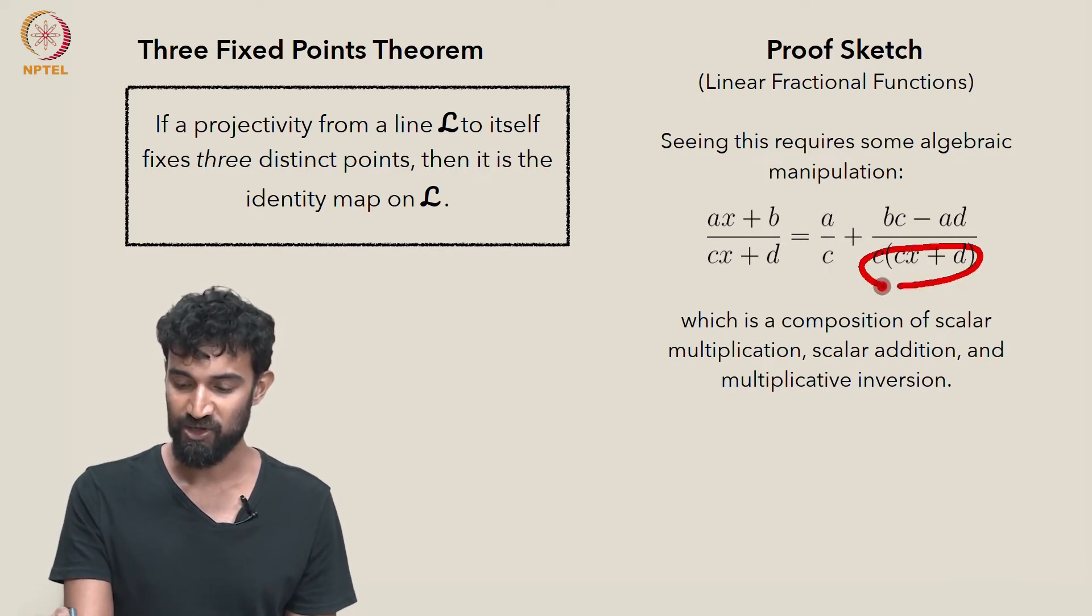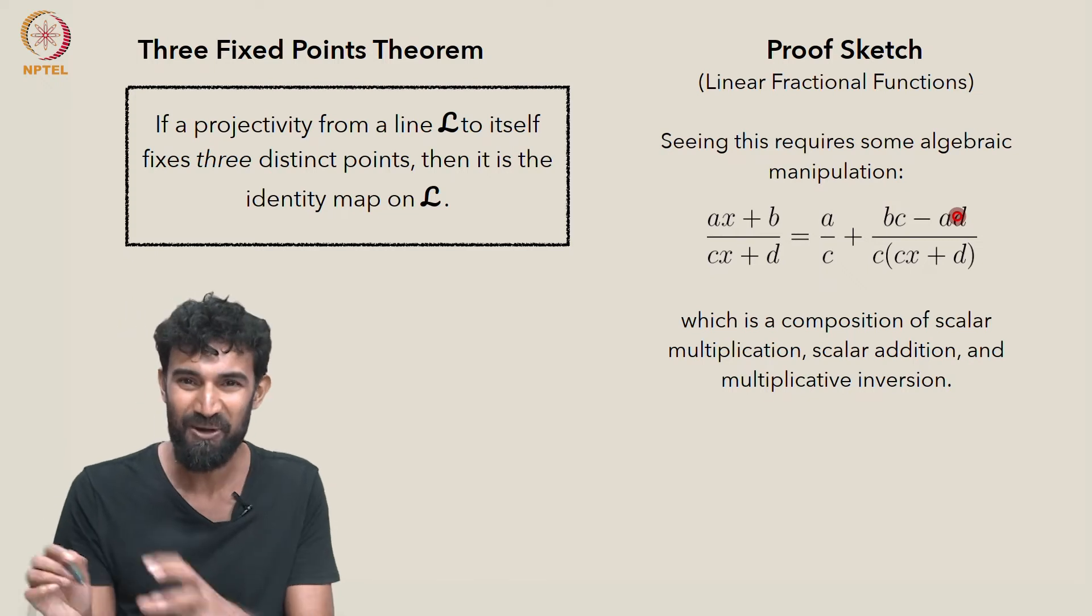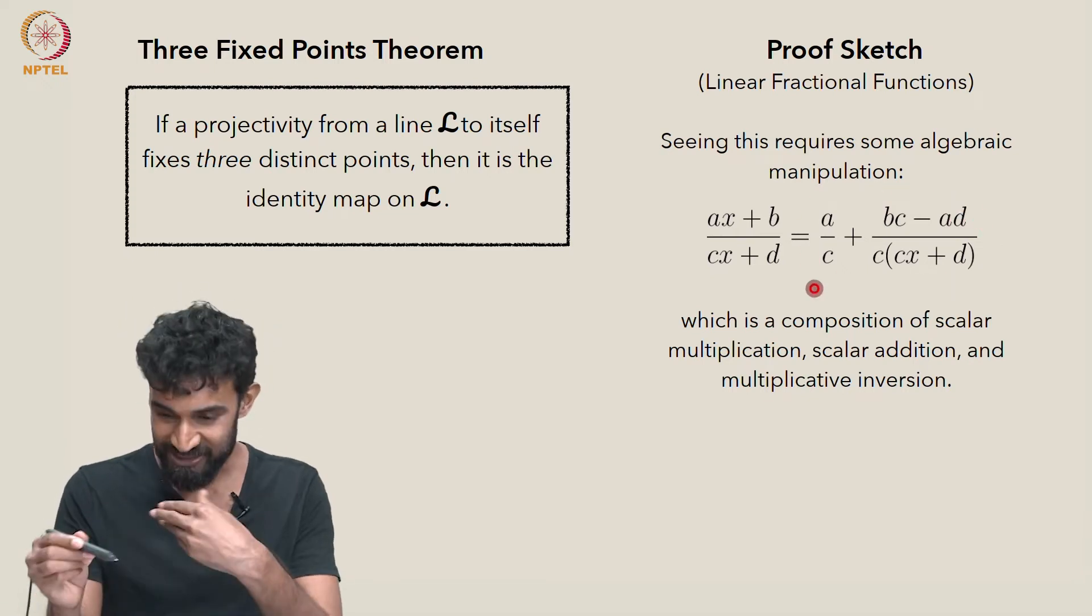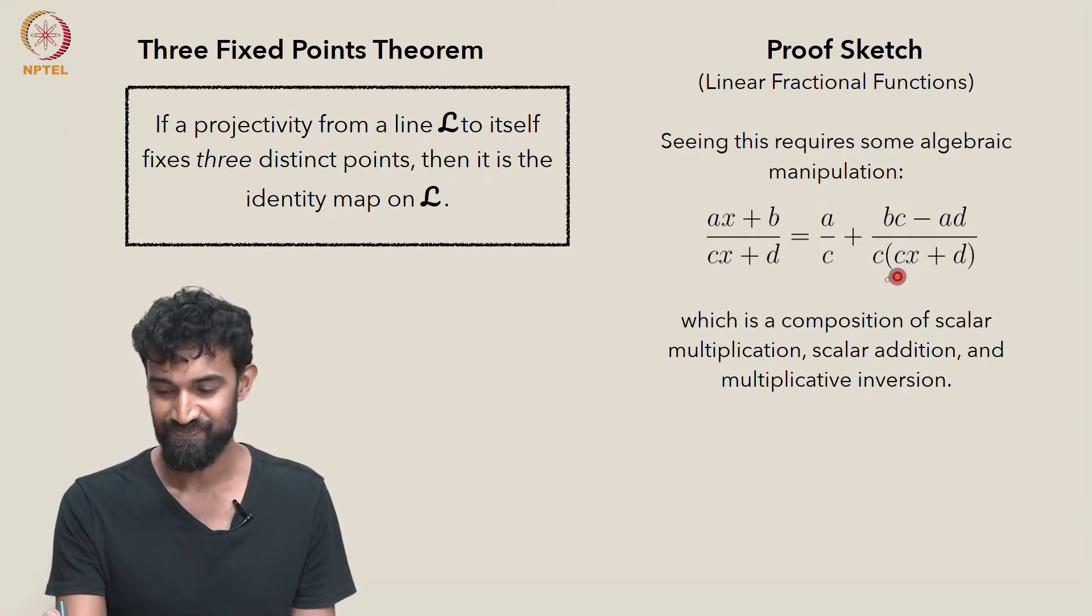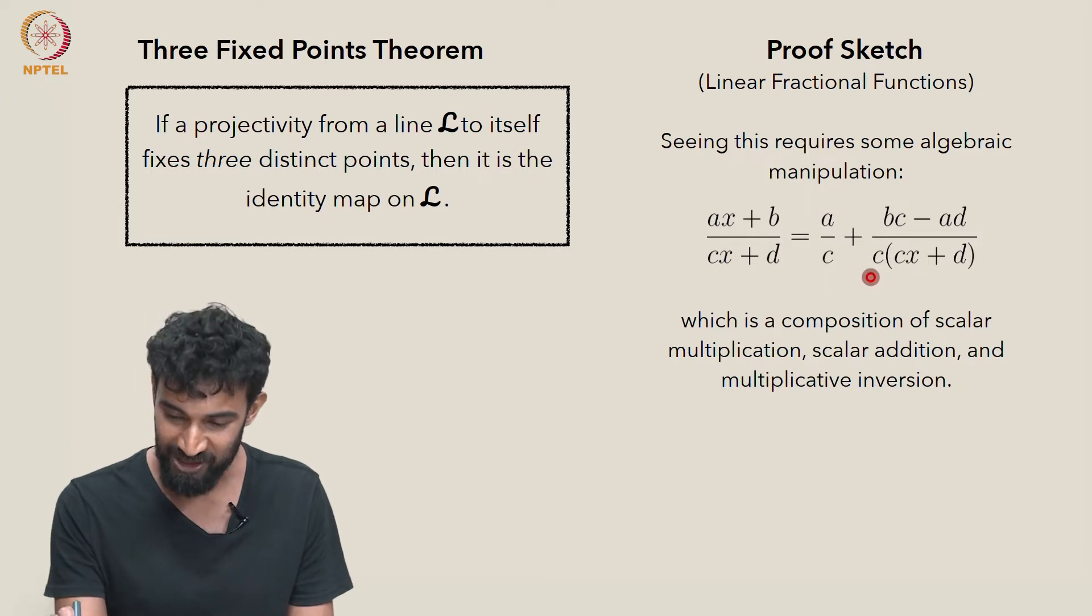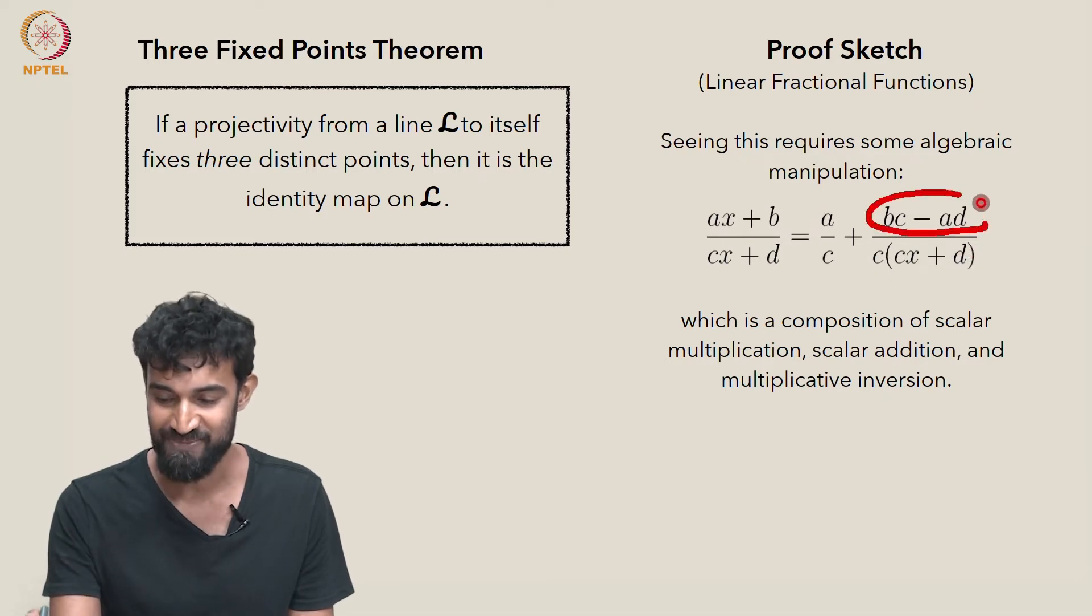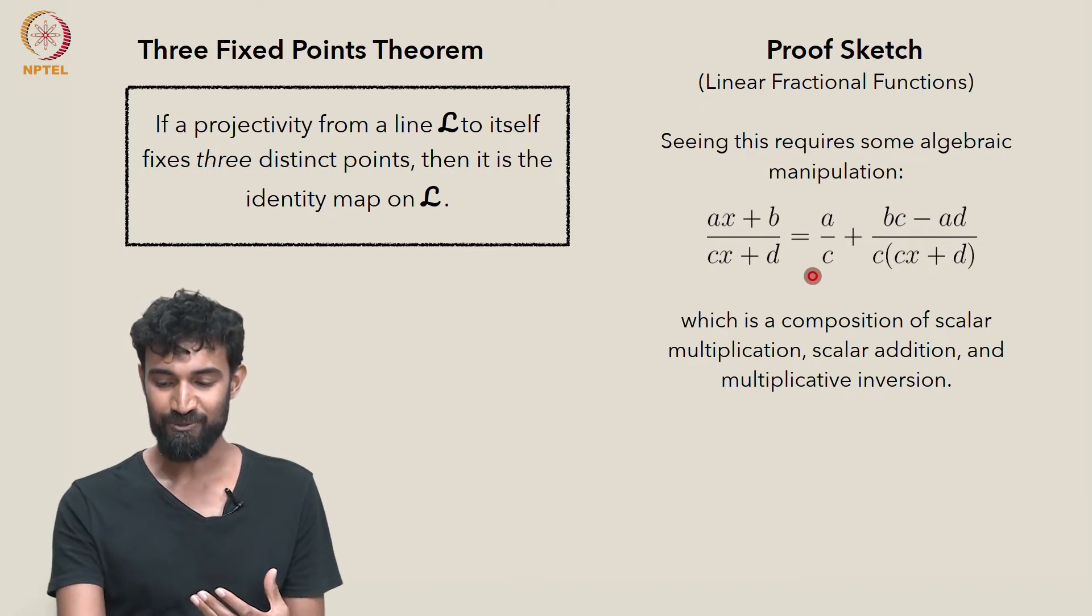Let me rewind a little bit. You can see exactly how it's a composition by just following how the function's constructed. We take x, we multiply by c, we add d, we multiply all that by c, we do multiplicative inversion, we do one over that, we multiply that by bc - ad, finally we add a/c. So we can arrive at this expression through this composition. In other words, we can get a function of this form as a projectivity.